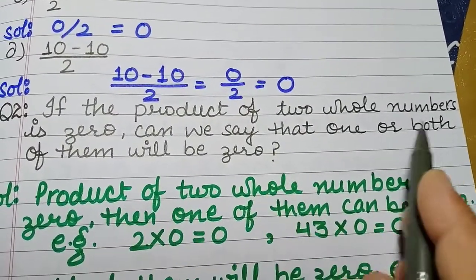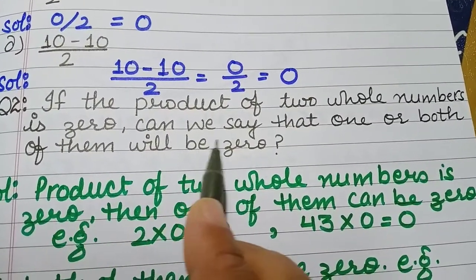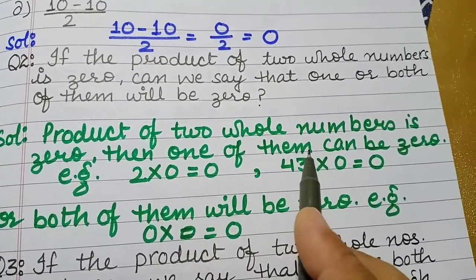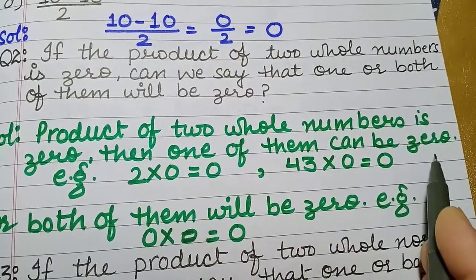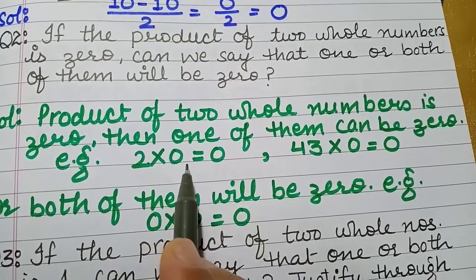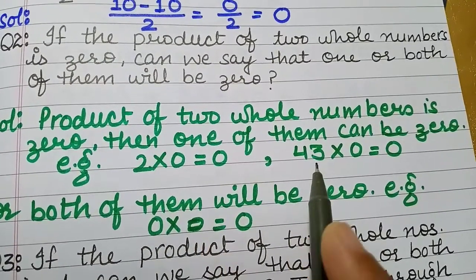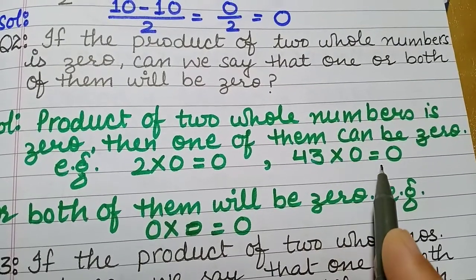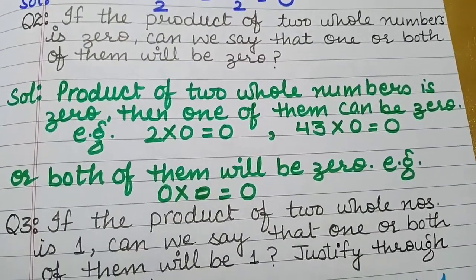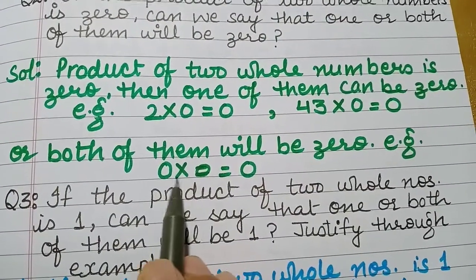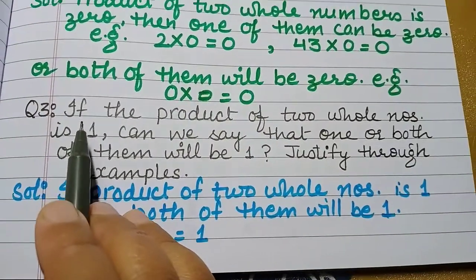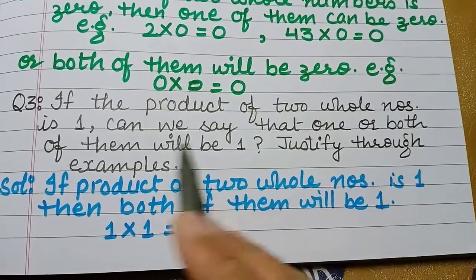Question number 2: if the product of two whole numbers is 0, can we say that one or both of them will be 0? If the product of two whole numbers is 0, then one of them can be 0 and both of them can be 0. For example, 2 into 0 is equal to 0, 43 into 0 is equal to 0, 52 into 0 is equal to 0. And if we multiply both zeros, the answer will again be 0.